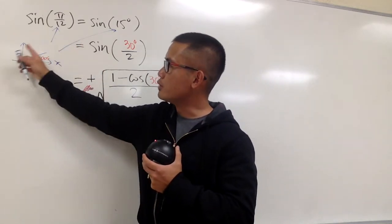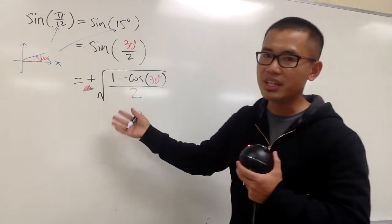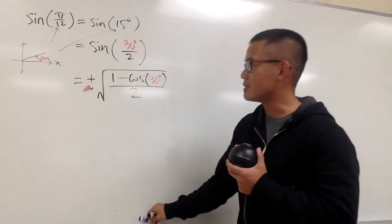If the angle, and you draw the picture, if it's down below here, you choose negative value. But once again, this is positive.